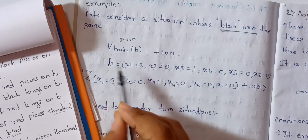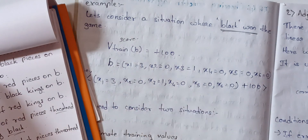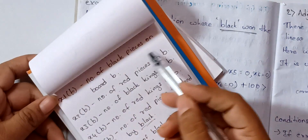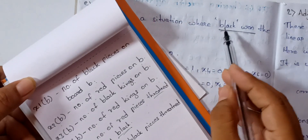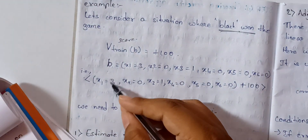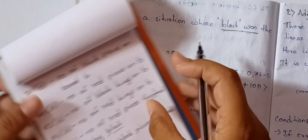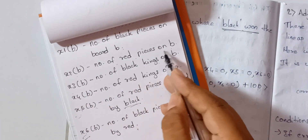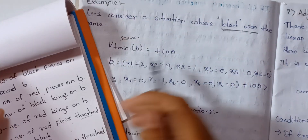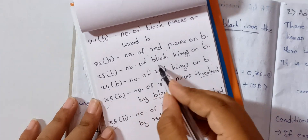Black won, so we have a score of plus 100 because it has won the game. Board b has a linear representation with x1, x2, x3. x1 is equal to 3 — that is the number of black pieces on the board. x2 is 0 — that is the number of red pieces on the board, which is 0. x3 is equal to 1 — that is the number of black kings.